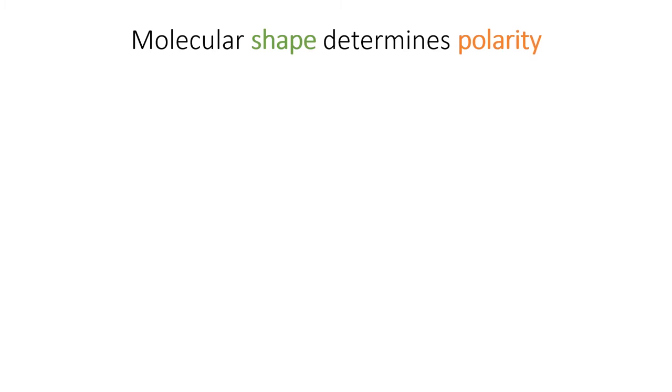You might want to think that the end goal of this chapter is to determine whether a molecule is polar or not. In order to do that, we first have to draw a valid Lewis structure for that molecule. So I hope you feel comfortable with the material from Chapter 8.